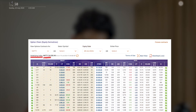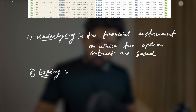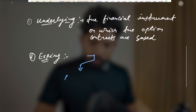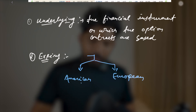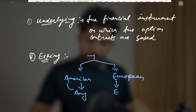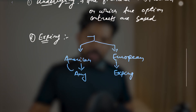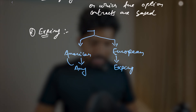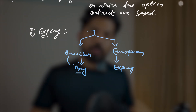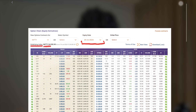Next we have the expiration date. As the name suggests, it is the date on which the option expires. Options have two types based on expiry: American options, which can be exercised anytime, and European options, which can only be exercised on the expiry date. In India we have European options. On the NSE website you can see the expiry date filter and select options based on your requirement.